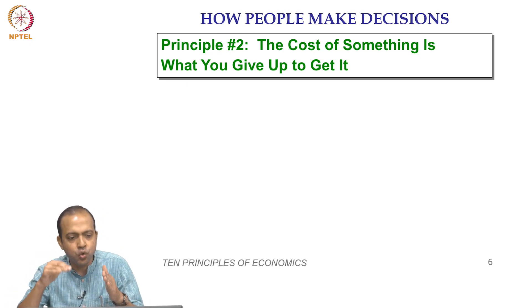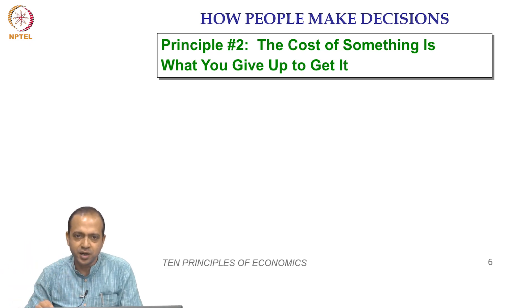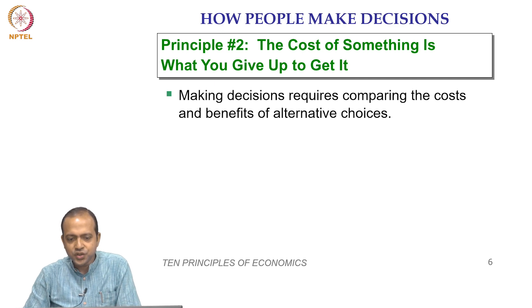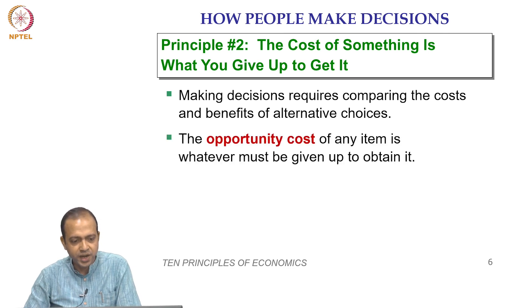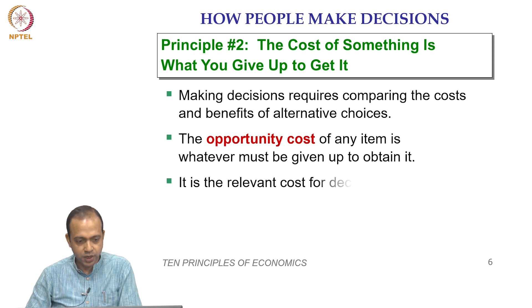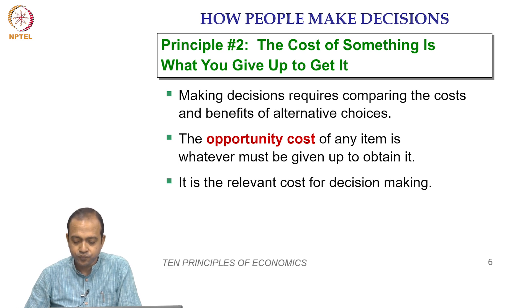The cost of something is what you give up to get it. Making decisions requires comparing the costs and benefits of alternative choices, and the opportunity cost of any item is whatever must be given up to obtain it. It is the relevant cost for decision-making — unless we realize there is an opportunity cost, we cannot take the right decision.